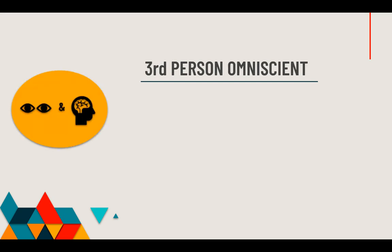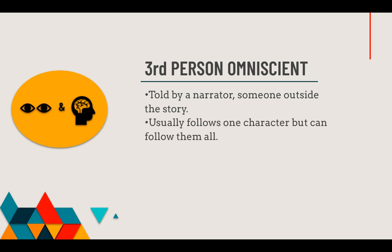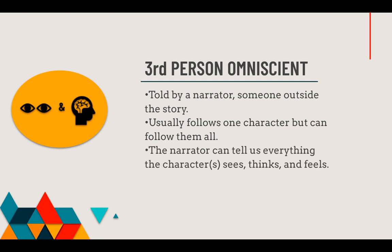Then you have third person omniscient. You'll notice the icons changed — now we're back to having the eyes and the brain. This is also a narrator, someone outside the story, not one of the characters speaking, but it usually follows one of the characters. Depending on the story, this third person narrator can follow all of the characters. Sometimes you only hear about the thoughts and feelings of the main character, but sometimes it follows several of them. This narrator can tell us everything the character sees, thinks, and feels. It's like an all-powerful narrator that can see everything, look into thoughts, and see what they're feeling — except it's not told by the character themselves, just by somebody who has the same knowledge as them.